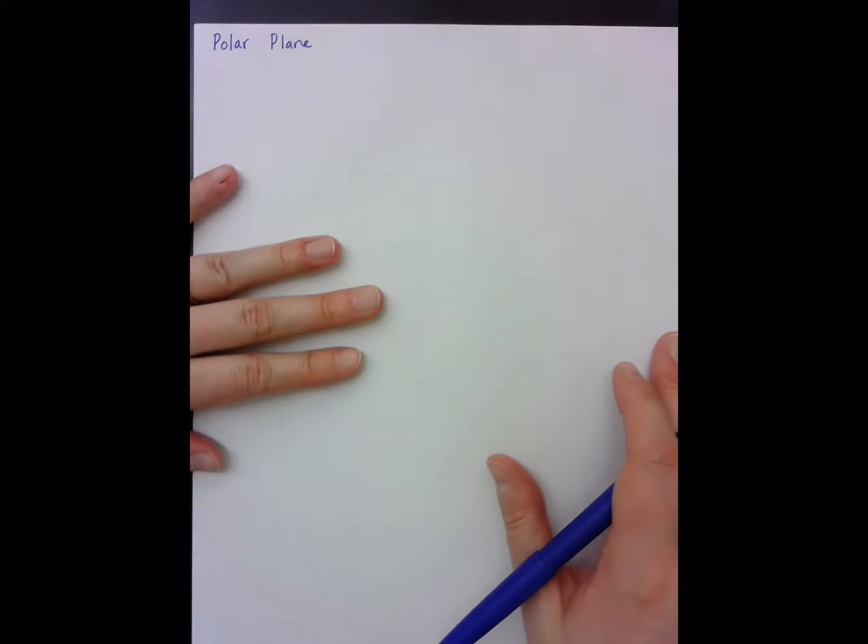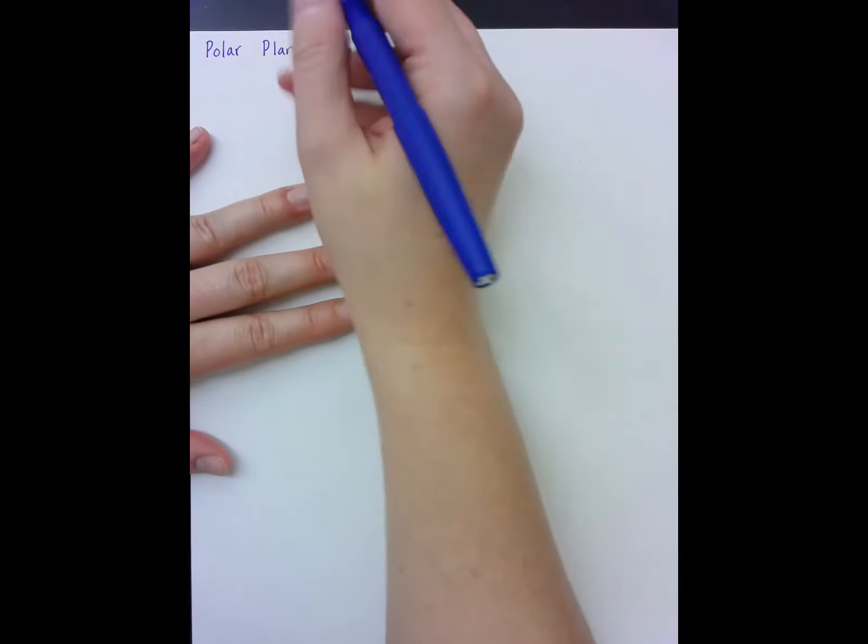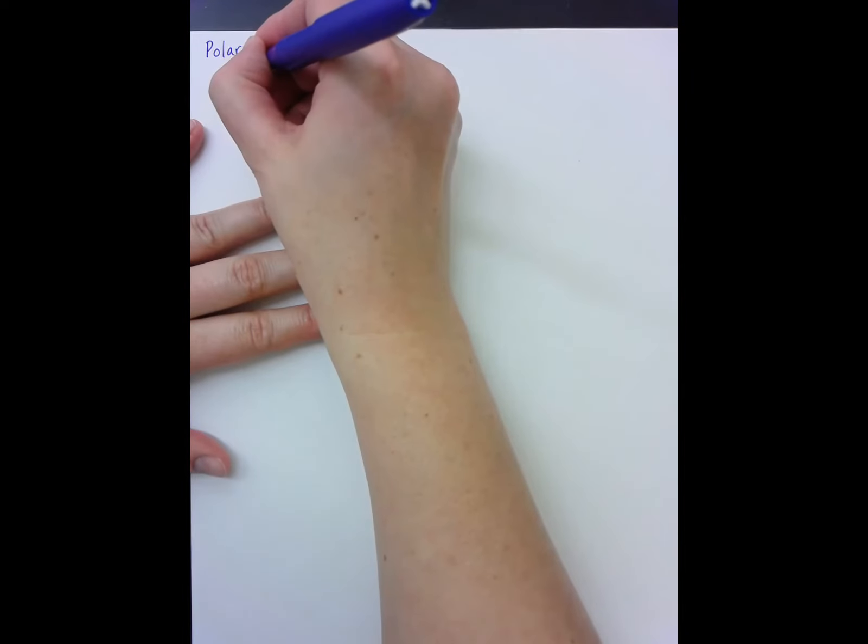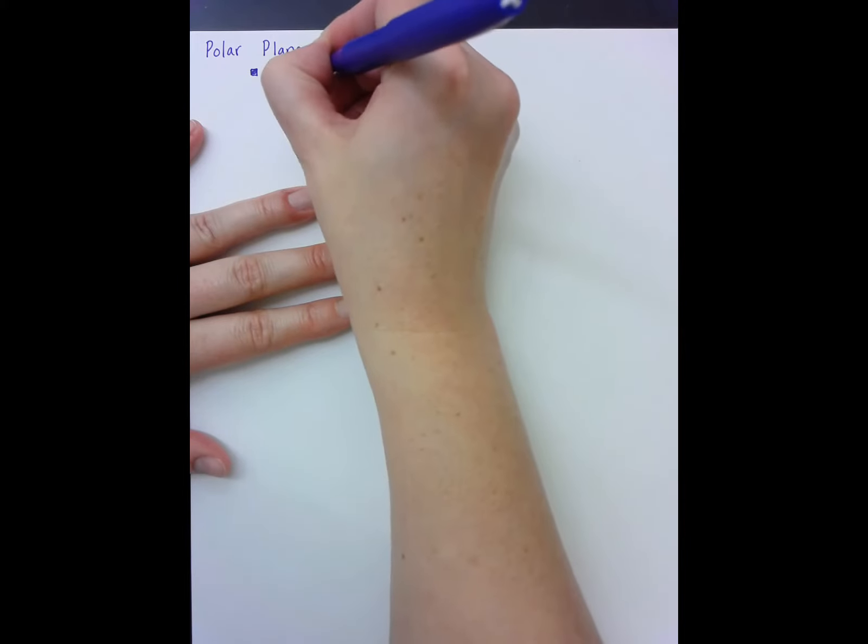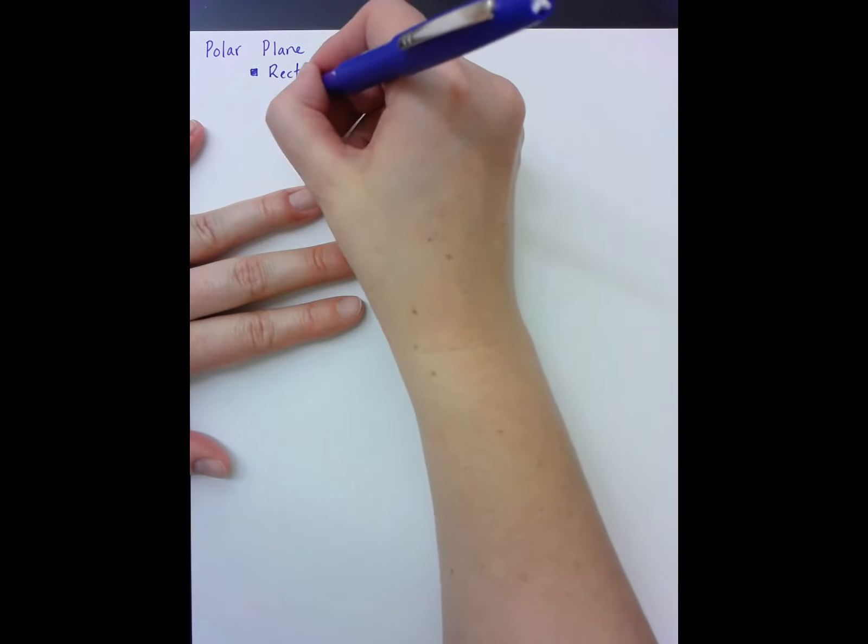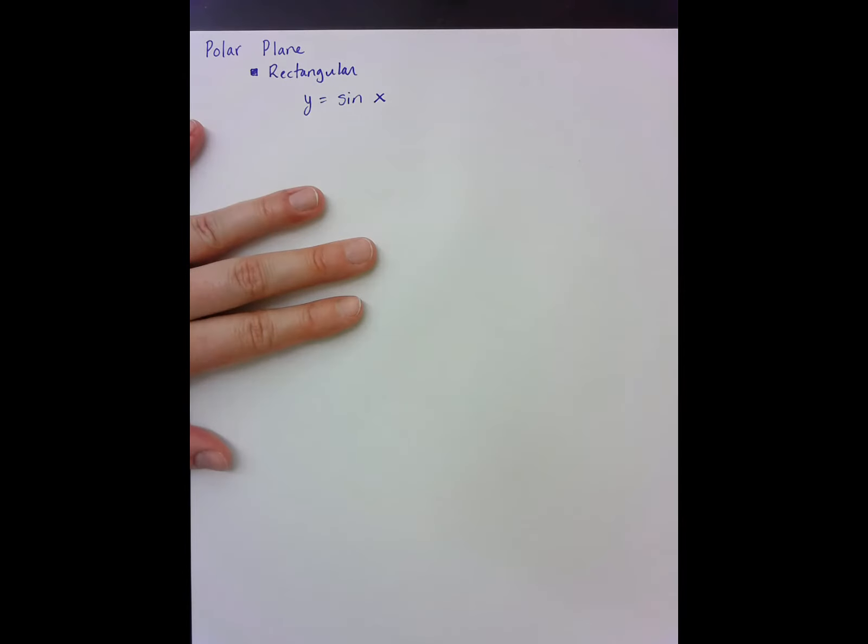These notes are on the polar plane. There are two different ways of talking about graphing functions—well, there are many ways—but the two that we've been focusing on in this chapter are rectangular, in which case we see functions written as y equals sine x.